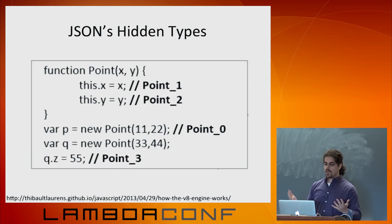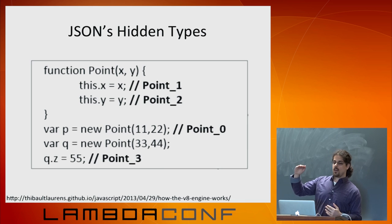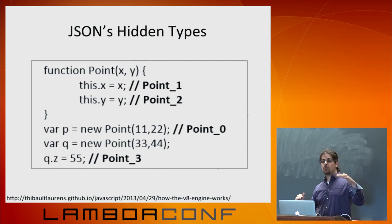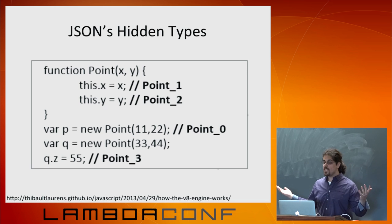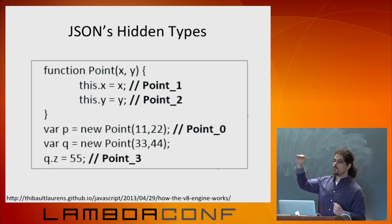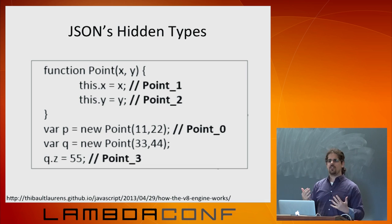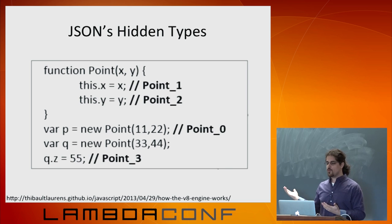We look at some JavaScript code. We have a constructor function to make a new point object. Then we make P, which is a point, and Q, which is a point. We'll assign a property to Q to make it a 3D point. We're going to go through the code in the order of the comments — point zero, one, two, and three — and look at the state of the types in the JavaScript program at each of those points.